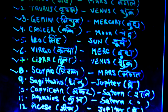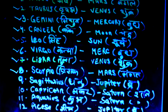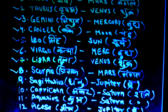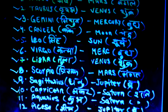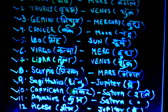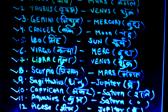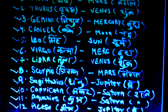Then we have Sagittarius, in Hindi Dhanu, and the lord is Jupiter — Brihaspati. Then we have Capricorn, Makara in Hindi, and the lord is Saturn, or Shani. Then we have Aquarius, Kumbha in Hindi, and the lord is also Saturn. Finally, we have Pisces, and the lord is Jupiter, or Brihaspati.